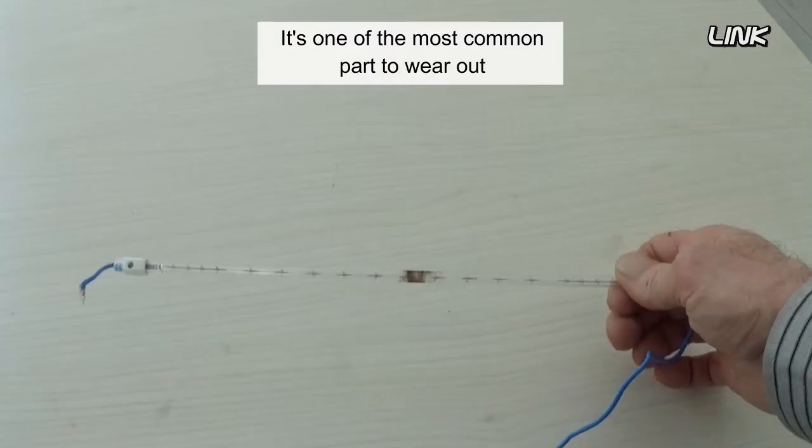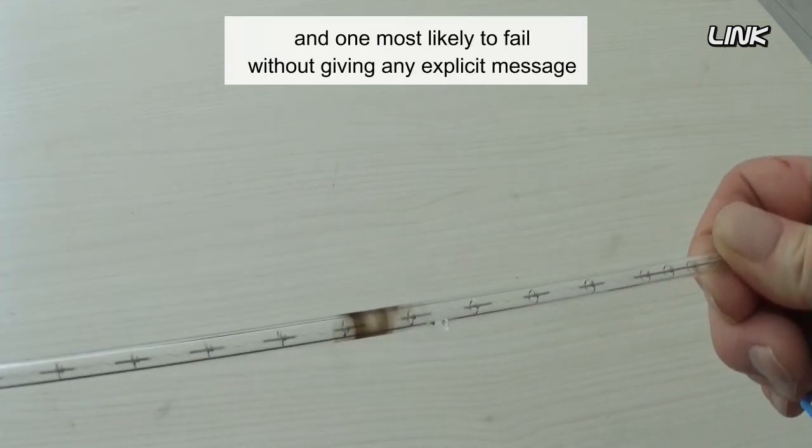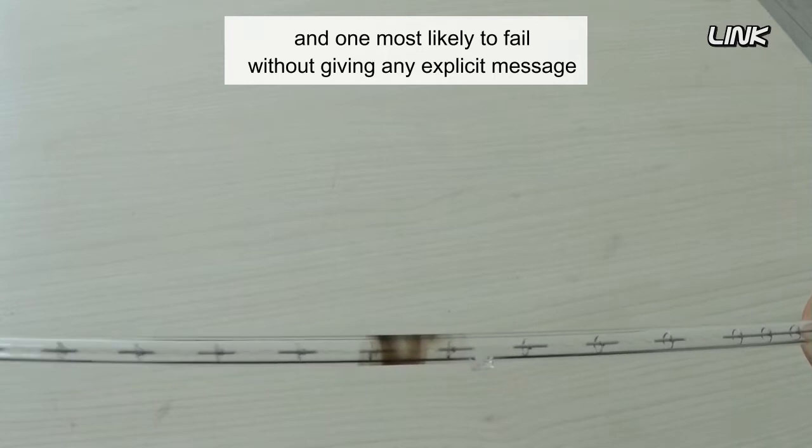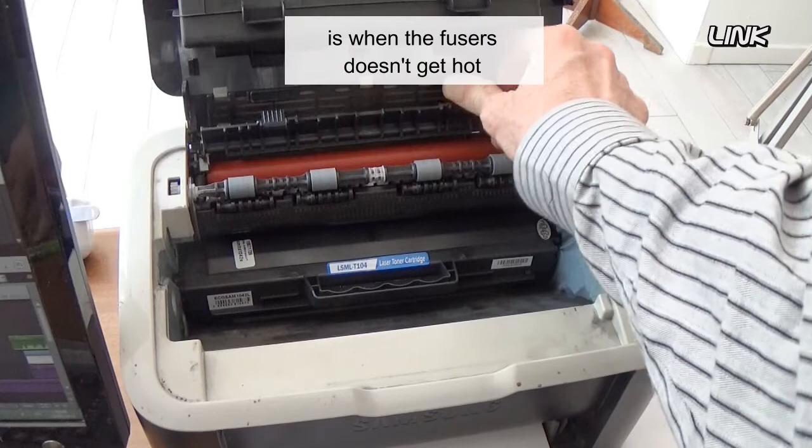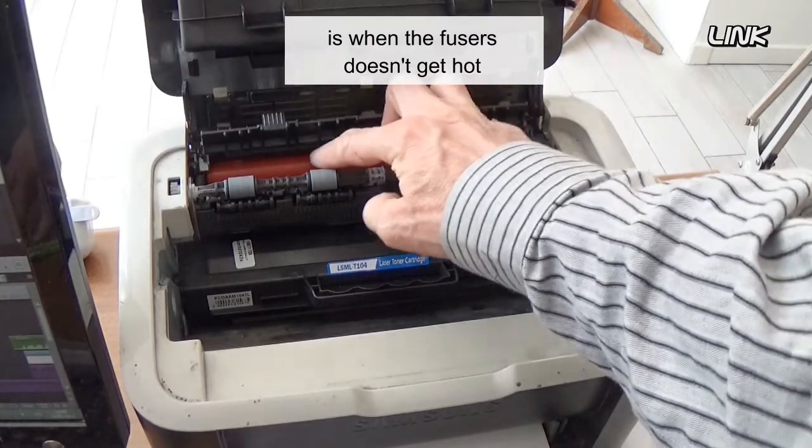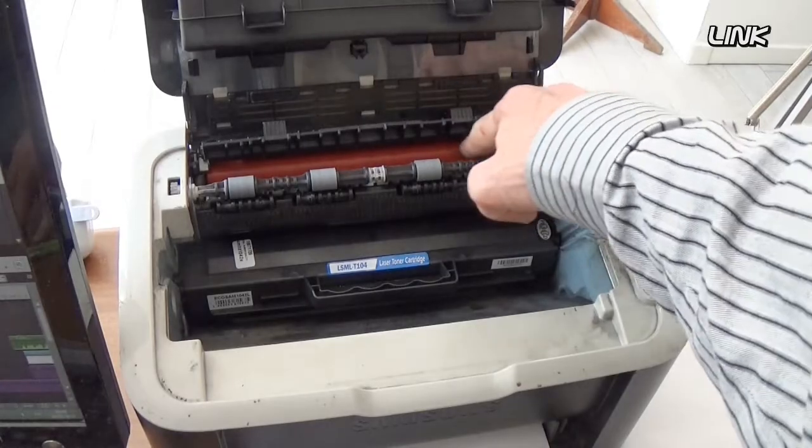This is one of the most common parts to wear out and most likely to fail without giving any explicit message. An indication that the lamp has failed is when the fuser doesn't get hot. You can use a multimeter to test its integrity.